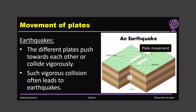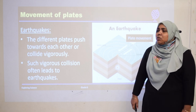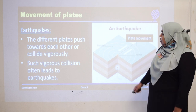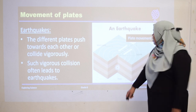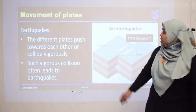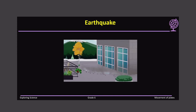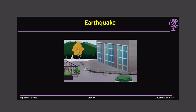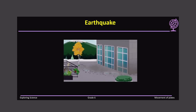Earthquakes are the result of the movement of plates inside the Earth. Each of the plates collide vigorously with the other and then an earthquake happens. The different plates push towards each other or collide vigorously — such vigorous collisions often lead to earthquakes. From the picture here, you can see energy being released from the inner core of the Earth to the crust, and two plates move against each other and a slip is formed. This slip at the top is called the fault slip. Every time there is an earthquake, we don't always notice it because most are just minor ones, but sometimes it shakes so strong that it can be felt over miles.